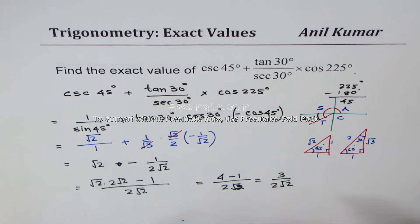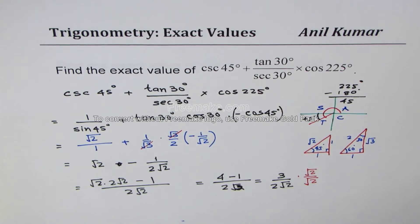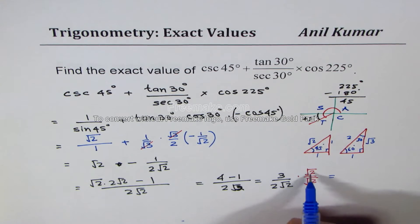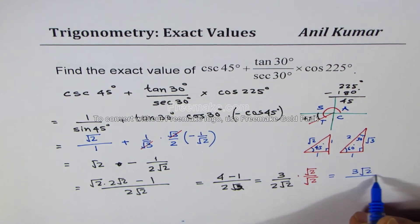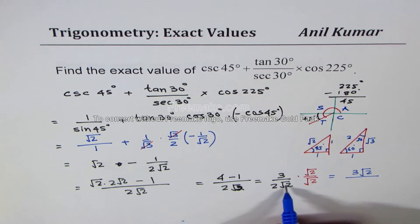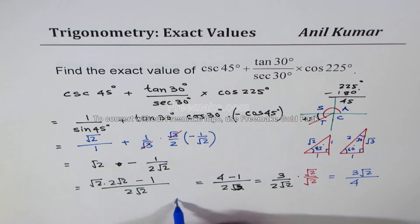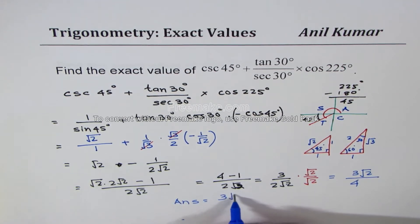That gives us 3 over 2 square root 2. I can rationalize this by multiplying and dividing by square root 2. Once you do that, you get 3 square root 2 divided by 2 square root 2 — 2 times 2 is 4 — so 3 square root 2 over 4. The exact value for the given question is 3 square root 2 over 4.